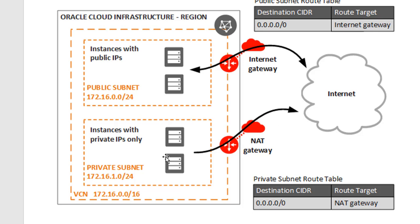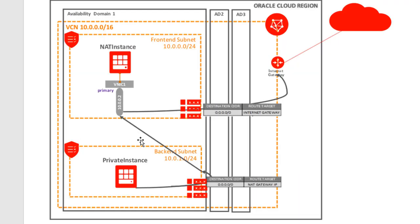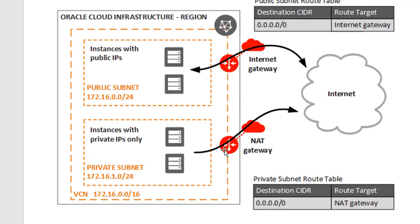You can have multiple instances which need to connect — you can add or remove them, and they will all be able to connect to that NAT gateway. With the older version, the more instances you added, you needed to go and update the security list, the route tables, and all those details, which you don't need to do with this NAT gateway.